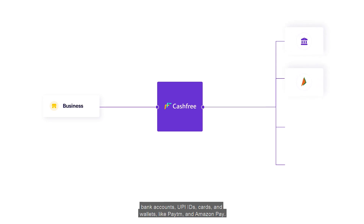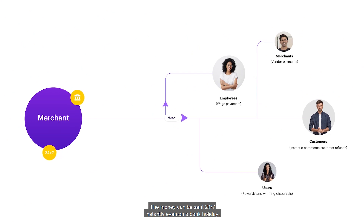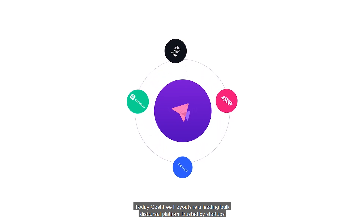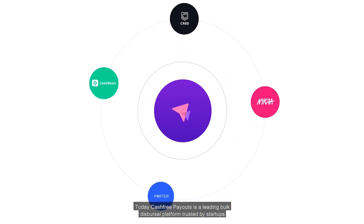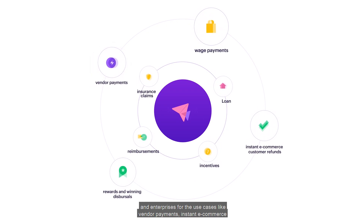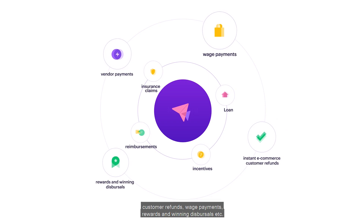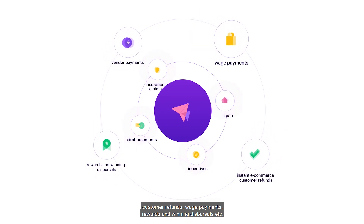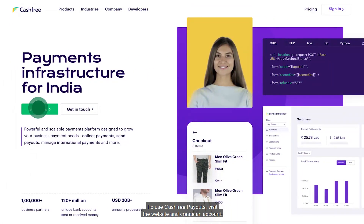Cashfree Payouts helps businesses make instant money transfers to bank accounts, UPI IDs, cards, and wallets like Paytm and Amazon Pay. Money can be sent 24/7 instantly, even on a bank holiday. Today, Cashfree Payouts is a leading bulk dispersal platform trusted by startups and enterprises for use cases like vendor payments, instant e-commerce customer refunds, wage payments, rewards, and winning dispersals. To use Cashfree Payouts, visit the website and create an account.